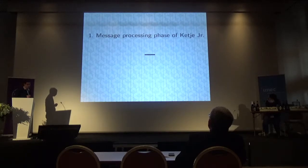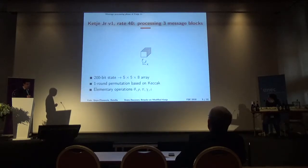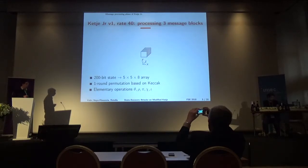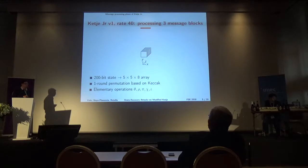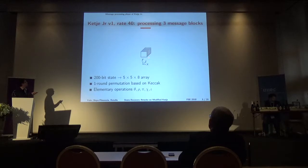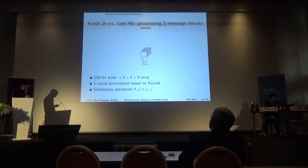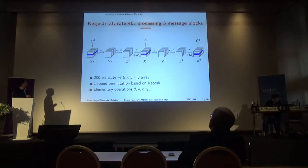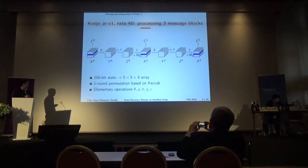How does KETJER work? There is a 200-bit state, which is seen as a 5×5×8 three-dimensional array — 5 bits in columns, 5 bits in rows, and 8 bits in the third dimension. It is based on one round of the KETJER permutation with elementary operations theta, rho, pi, chi, and iota.